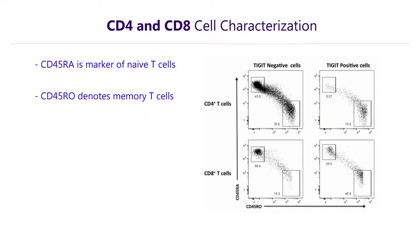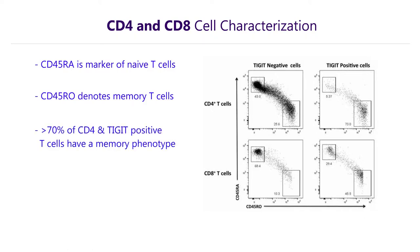We also decided to examine whether TIGIT was preferentially expressed in naive or memory T-cells. CD45RA is a marker of naive T-cells, while CD45RO denotes memory T-cells. Of the CD4 and TIGIT positive T-cells, over 70% have a memory phenotype.